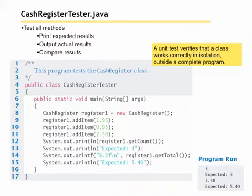When you are testing a class, it's important that you test all methods, that you print expected results, and that you output the actual results and compare. Testing means that you have to say what do you expect, what did you get, does that match? You have to try to test all lines of code to be thorough.